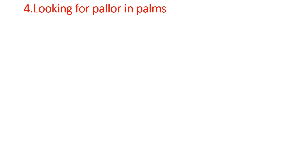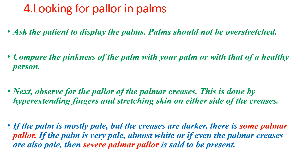The fourth site is looking for pallor in the palms. Ask the patient to display their palms, which should not be over-stretched. Compare the pinkness of the palm with your own palm or with that of a healthy person. Next, observe for pallor of the palmar creases by hyperextending the fingers and stretching the skin on either side of the crease. If the palm is mostly pale but the creases are darker, there is some palmar pallor. If the palm is very pale — almost white — or if the palmar creases are also pale, then severe palmar pallor is said to be present.